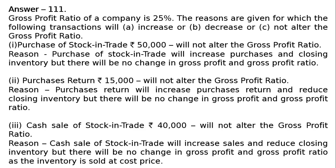Third: Cash sale of stock-in-trade rupees 40,000 will not alter the gross profit ratio, because it is not stated whether these goods are sold at profit or loss. Cash sale will increase sales and reduce closing inventory but there will be no change in gross profit and gross profit ratio, as the inventory is sold at cost price.